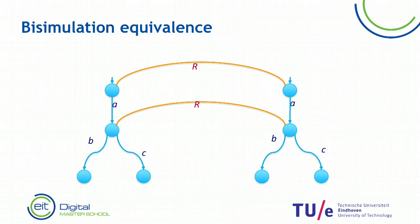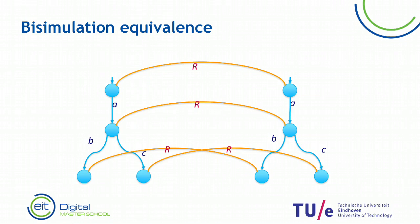If we have an A step at the left, then it should be possible to do an A step at the right and the endpoint should be related. Suppose the states in the middle are related. If we have a B step at the right side, then it should be possible to mimic that at the left side, so these two states should also be related. Similarly, if we look at the states in the middle and do a C step at the left, then it should be possible to mimic that by a C step, and so this enforces these two states to be related.